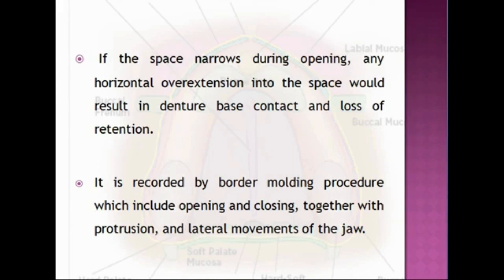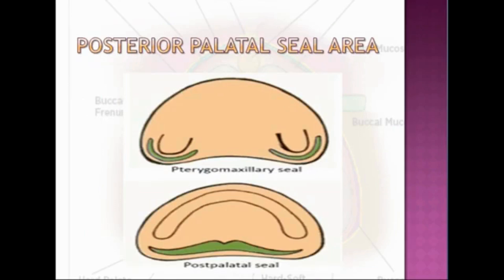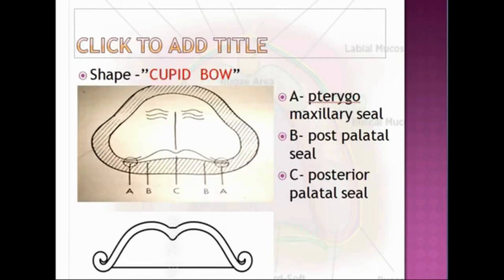The last limiting structure is the posterior palatal seal area, also called the post-dam area. It is a soft tissue area at or beyond the junction of the hard and soft palates on which pressure within physiological limits can be applied by a complete denture to aid in its retention. The posterior palatal seal area has two components: the pterygo-maxillary seal and the post palatal seal. The shape of the posterior palatal seal area is similar to a cupid's bow.